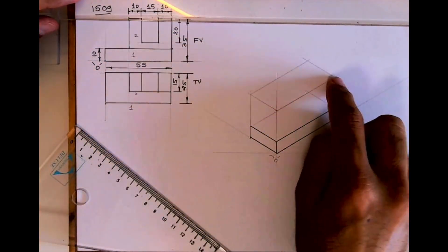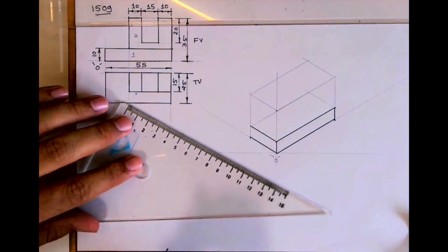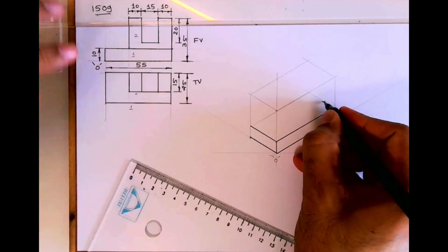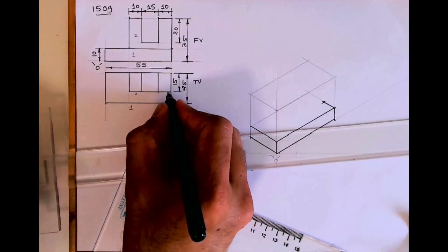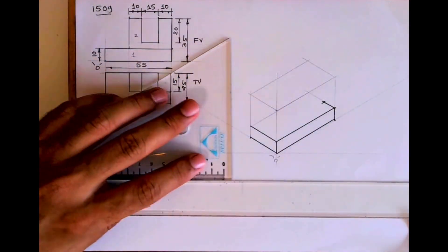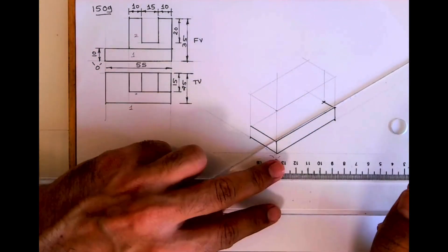Now part two is how much behind? 25 minus 15, so I will take 10 from here like this. Then I will start. See it is here, then I will take 10, 15, 10, so it will be 35. And height is 25, so from here 25 up.